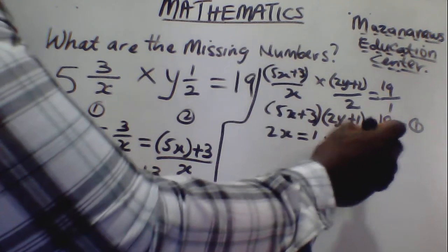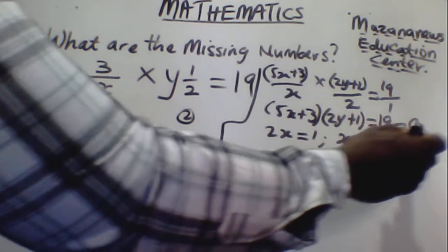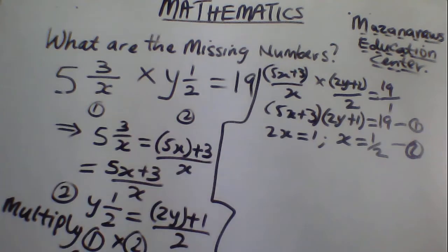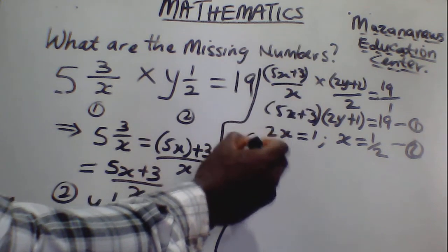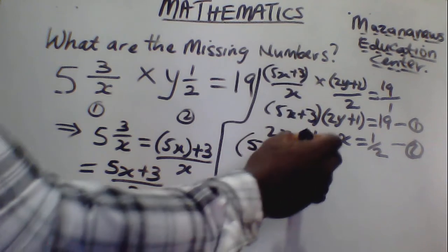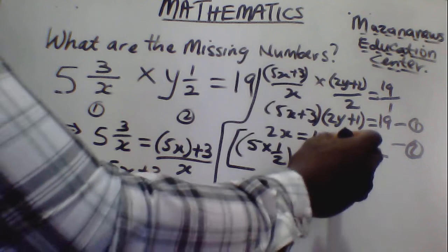This means x is equal to one half. So once you get the value of x, you can substitute it into equation 1 — put equation 2 into equation 1 wherever you see x. From here, we have 5 times one half plus 3, in brackets, times 2y plus 1, is equal to 19. I hope you have seen it.